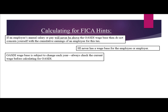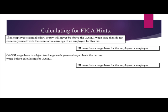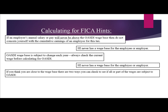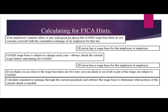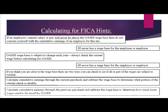If you think you are close to the wage base, there are two ways to check whether all or part of the wages are subject to OASDI. Method 1: Calculate cumulative earnings through the current paycheck and subtract the wage base to determine what portion of the current check is taxable. Method 2: Calculate cumulative earnings through the previous paycheck and subtract the wage base to determine how much more in wages needs to be taxed for OASDI.